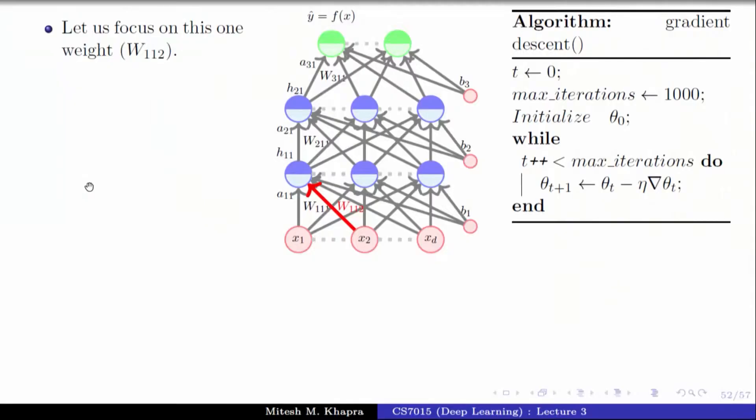So this is what our gradient descent algorithm was. We were running this for some thousand iterations starting with some theta naught, and what we were trying to do is update the thetas using the gradient values. Now instead of the single or the two weights w comma b that we had in our earlier toy example, now we have these many many weights and we want to compute the partial derivative with respect to all of them.